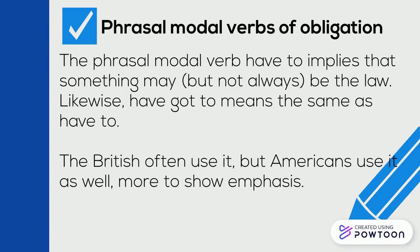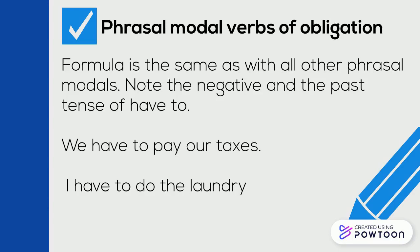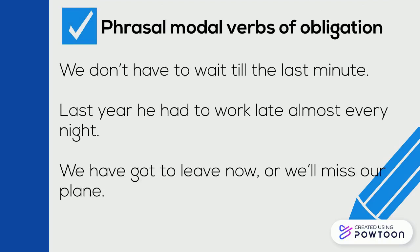Phrasal verbs of obligation. The phrasal modal verb 'have to' implies that something may, but not always, be the law. Likewise, 'have got to' means the same as 'have to.' The British often use it, but Americans use it as well, more to show emphasis. Examples: We have to pay our taxes. I have to do the laundry. We don't have to wait till the last minute. Last year he had to work late almost every night. We have got to leave now or we'll miss our flight.